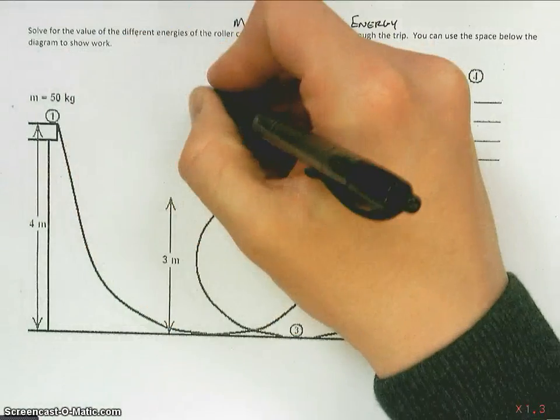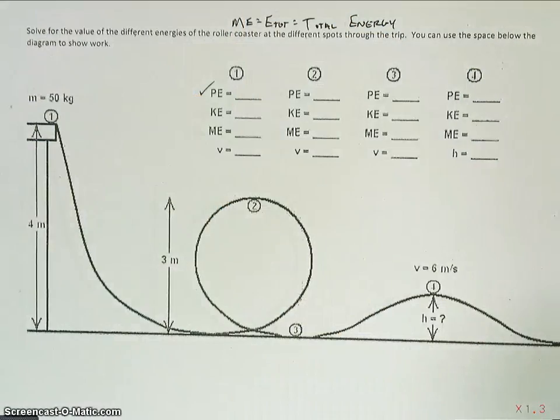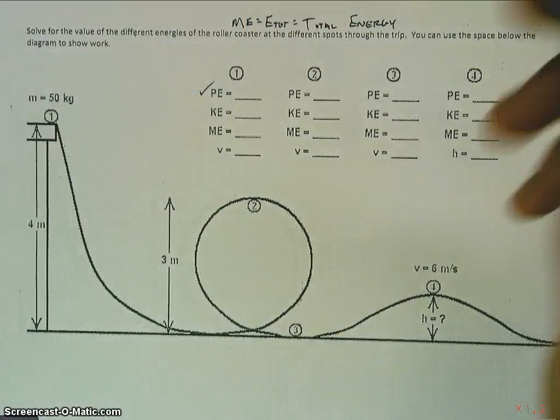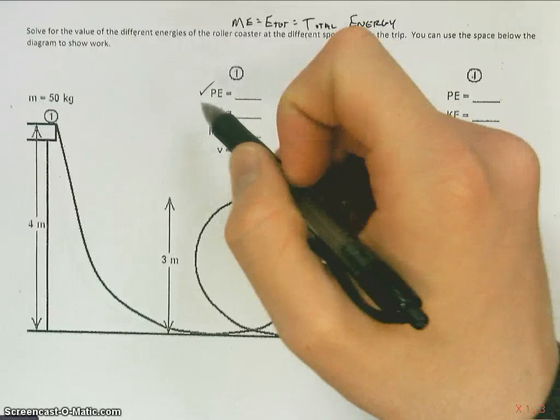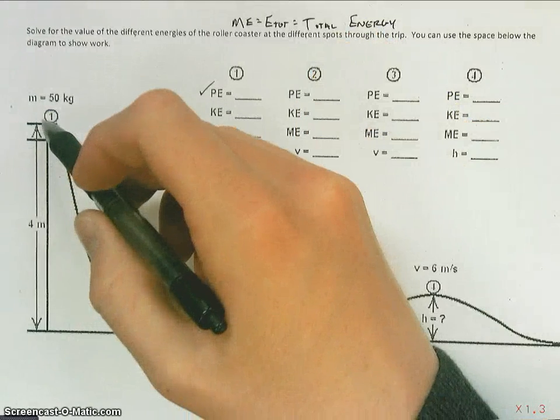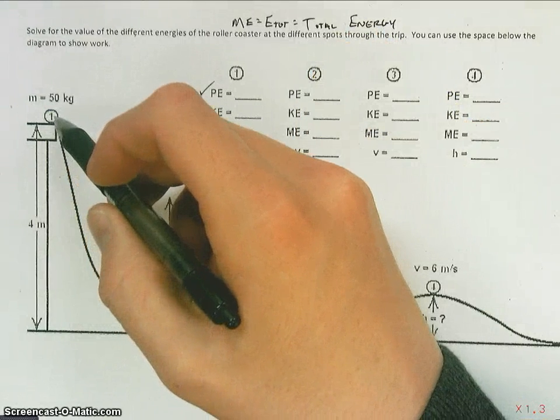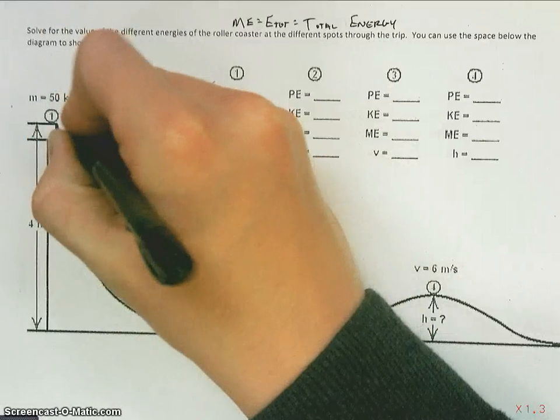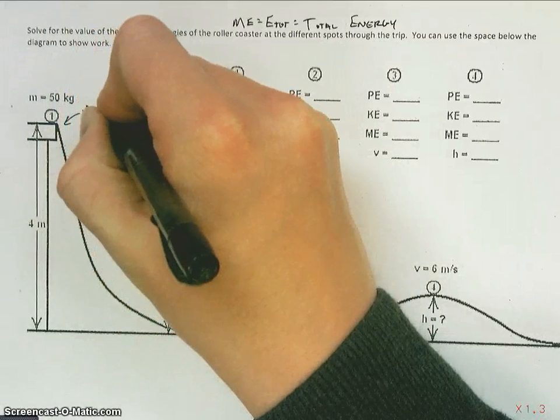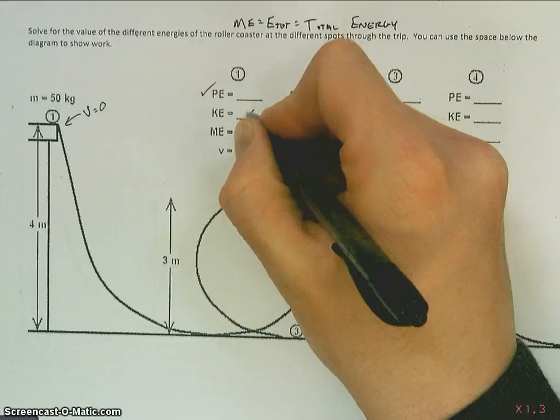Because if the energy is conserved, the amount of energy we have here is the same that we have there, there, and there. So I know because it's at some height it has to have potential energy. I also have the assumption to make, just like most roller coasters, when it's at the very peak at this point, velocity here is zero, which means there is no kinetic energy.